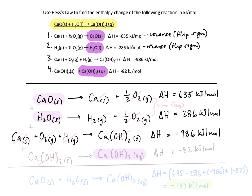Our final equation is also in the proper order and we have solid calcium hydroxide going to aqueous calcium hydroxide which has an enthalpy change of negative 82 kilojoules per mole.